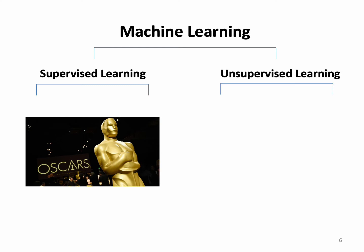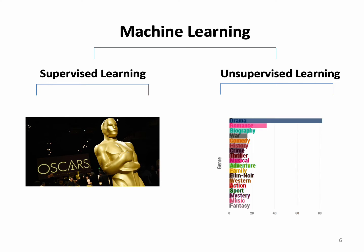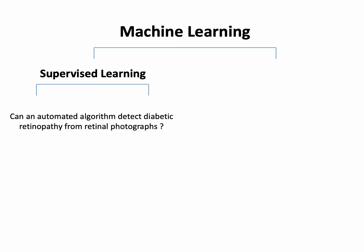Contrast that with unsupervised learning. With unsupervised learning, there's no such thing as ground truth. For example, movie genres — I watch Good Will Hunting and I think that's a drama. My fiancé says no, that's a romance. Well, neither of us are right and neither of us are wrong, because there's no ground truth to definitively say what genre this movie is.